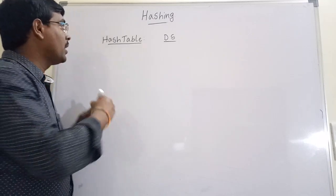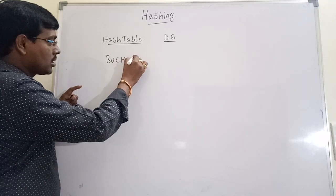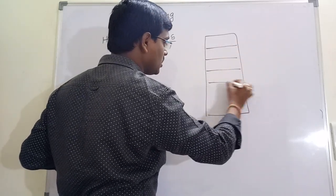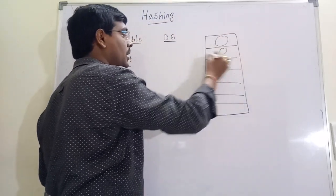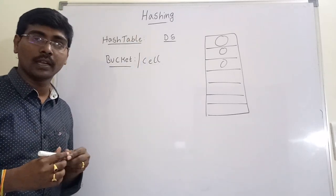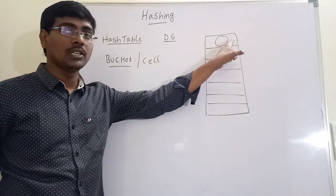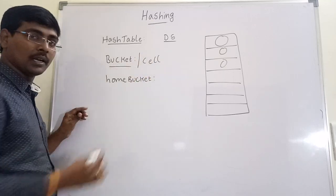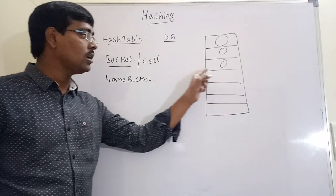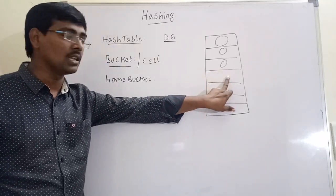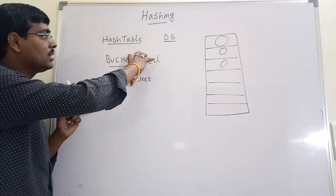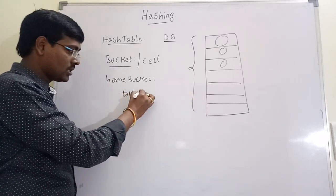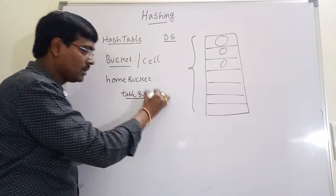At the same time, a hash table is used to retrieve the records after hashing. The hash table is divided into different numbers of buckets. This one is called a bucket or cell — that is where our key or element is placed. Home bucket means a collision bucket: if more than one key wants to occupy the same position or the same cell, that bucket is called a home bucket.